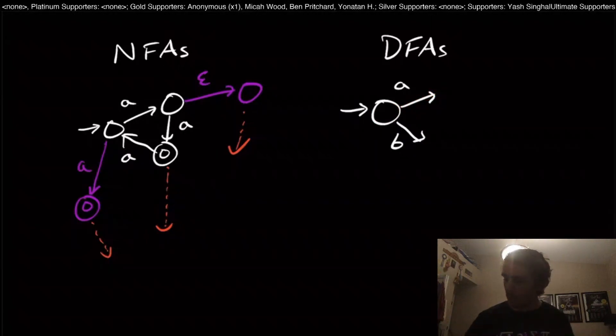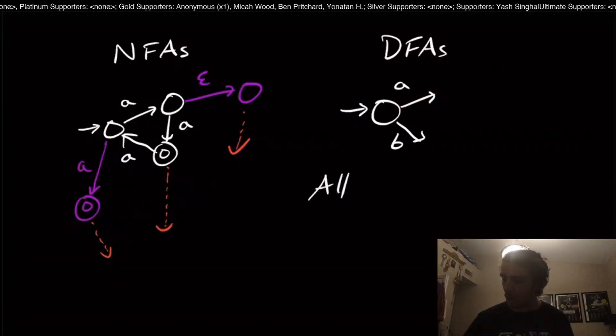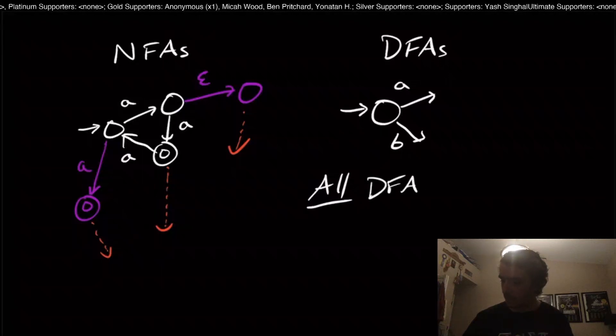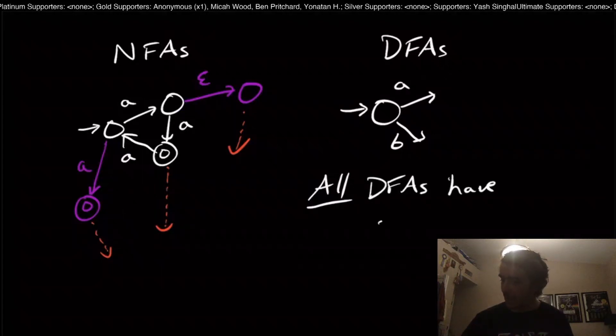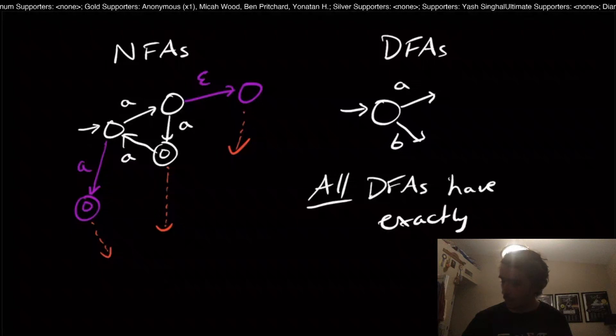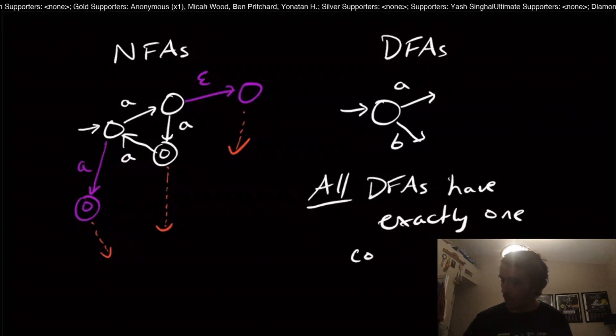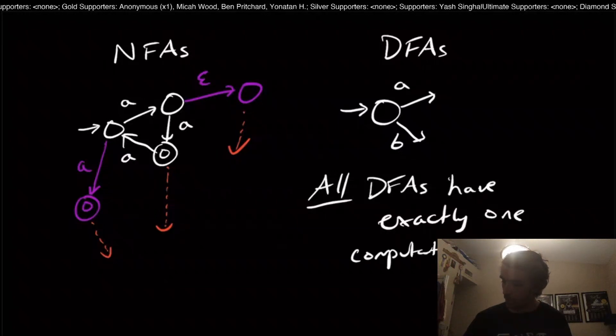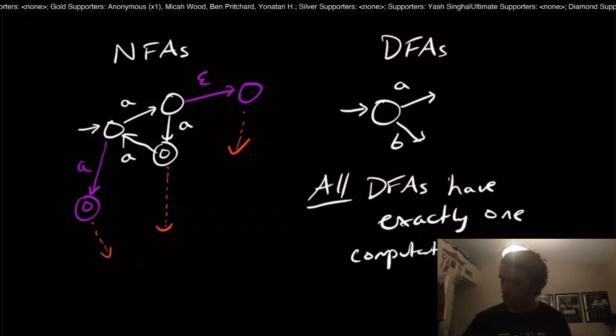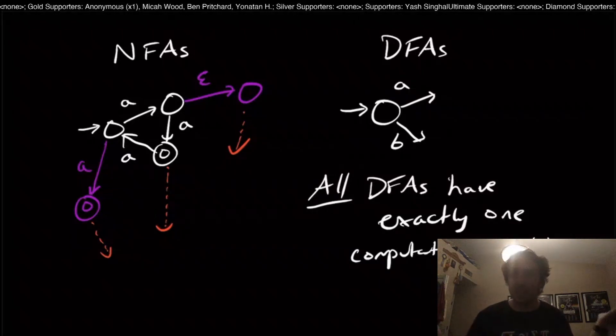One thing that we saw was that all DFAs have exactly one computation per string, per input string. It does exactly one thing.